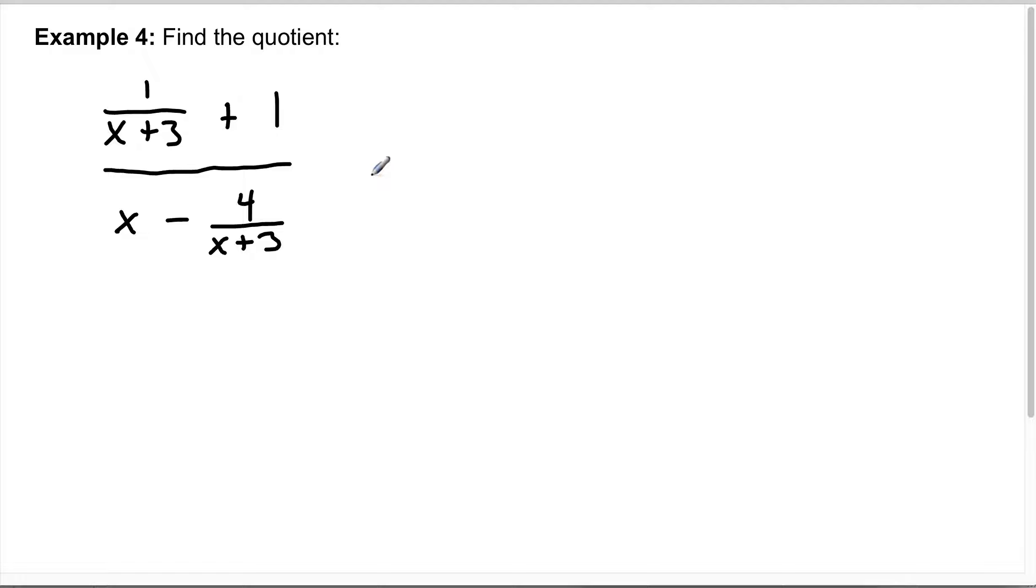Okay, so we want to find the quotient. I'm going to use the same technique of multiplying by the LCD of the denominators. So what is the LCD? Or I guess just the LCD - kind of being redundant, we're saying LCD of the denominators. But the LCD is x plus 3. Great.